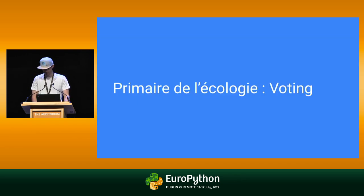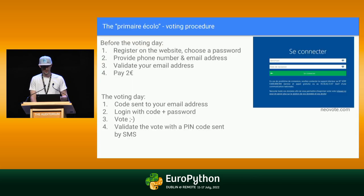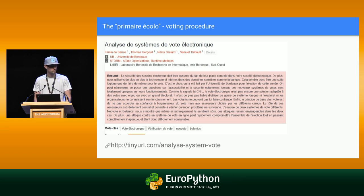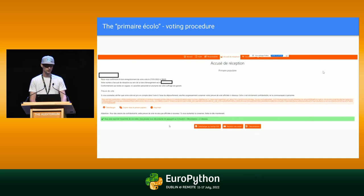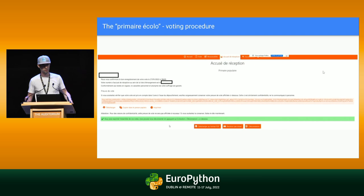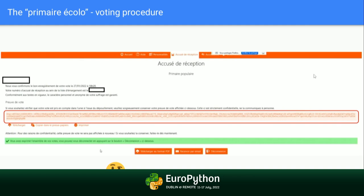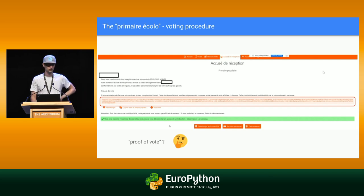I voted for the Green Party primary. How it works: you go on the website, choose a password, then go on the voting website, use your cell phone with a PIN code to vote. At the end of voting, you have this last screen which says 'you voted.' There is a weird thing in the middle, a bit red-orange, which they call the proof of vote. They say you voted, here is your proof of vote — keep it, it's personal. If you want to check that your vote has been recorded in the ballot box, you should use that.